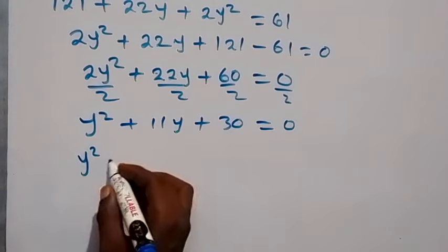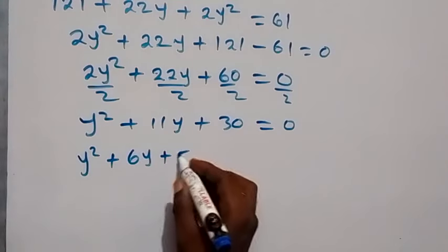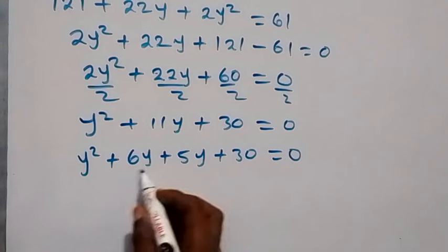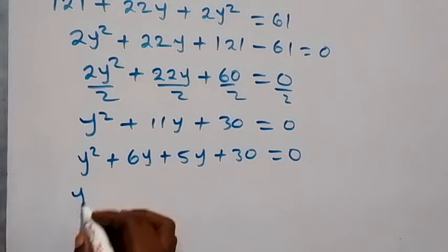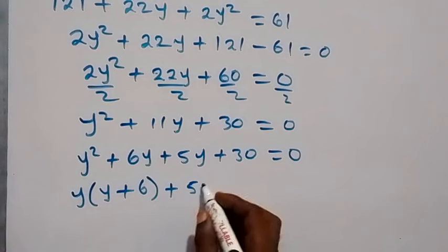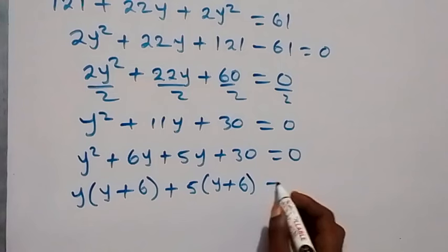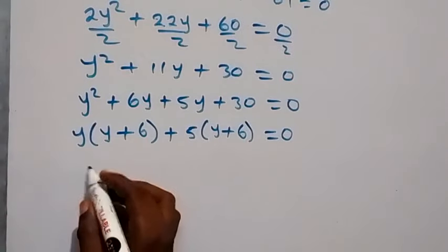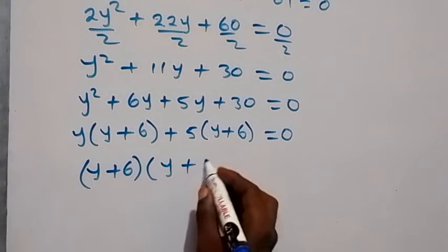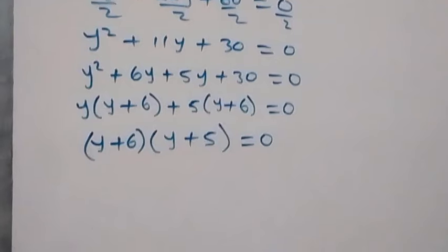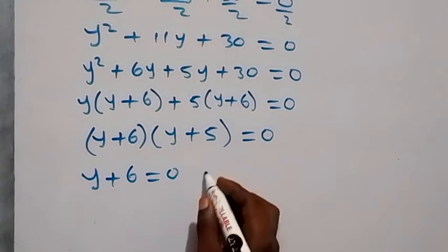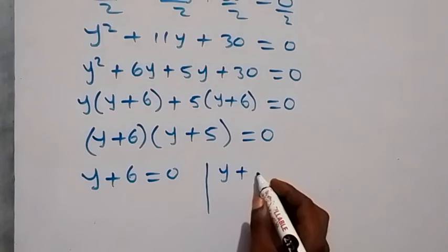We rewrite as y squared plus 6y plus 5y plus 30 equals zero. Factoring by grouping: y is common in the first pair, giving y(y plus 6), and 5 is common in the second pair, giving 5(y plus 6). So we have (y plus 6)(y plus 5) equals zero.